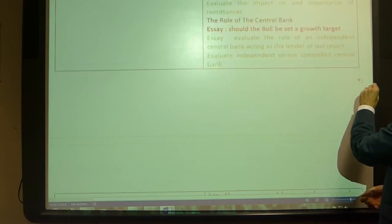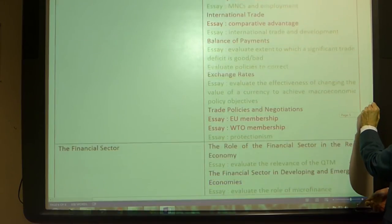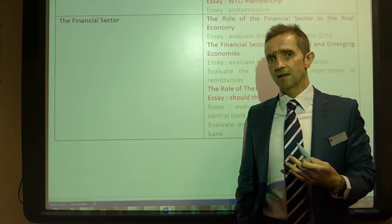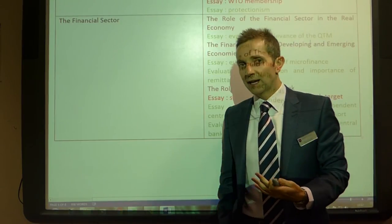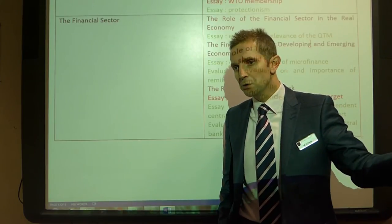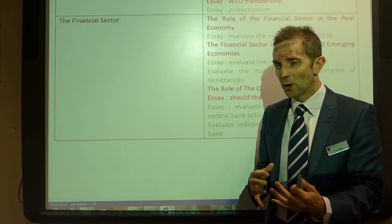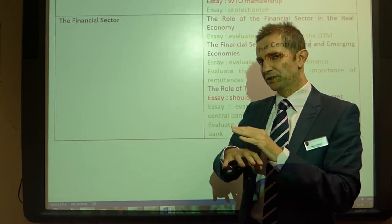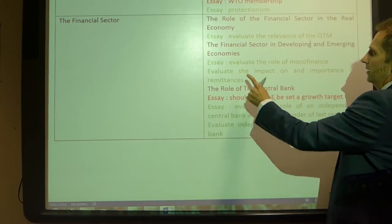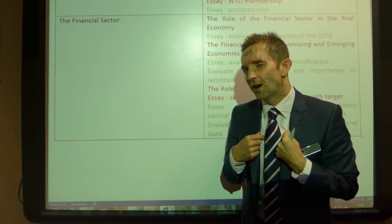We move into the last section — the financial sector, the big unknown. Will you get a question saying evaluate the relevance of the quantity theory of money? That would be a lovely essay, because we've had 435 billion of new quantitative easing money dropped into the economy and it hasn't led to rampant inflation — you could discuss theory versus reality. Evaluate the role of microfinance — again, if it were me I would steer clear of that as it's such a small element of your textbook, but you might not have an alternative.